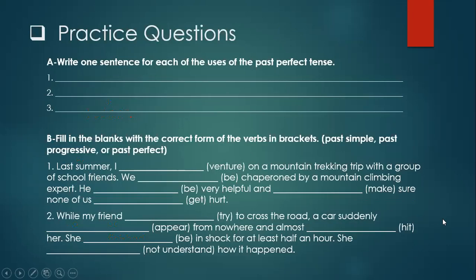Now we have practice questions. In the first part, you have to write one sentence for each of the uses of the past perfect tense: one sentence for an action before a specific point in time, one for an action before another action, and one for a cause-effect relationship. In part B, fill in the blanks with the correct form of the verbs in brackets. In this question, we are practicing not only past perfect but also past simple and past progressive, since we covered all three.